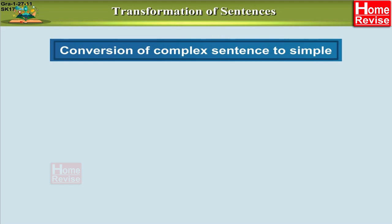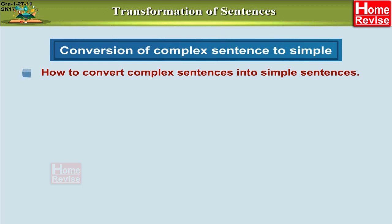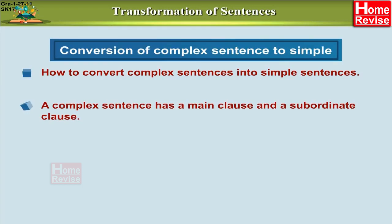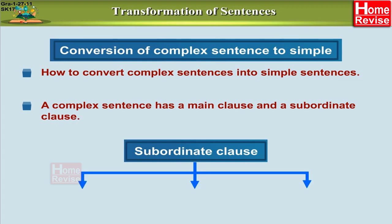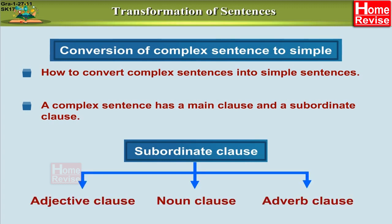Hi friends, now let's understand the conversion of complex sentences into simple sentences. As stated earlier, a complex sentence has a main clause and a subordinating clause. The subordinating clauses are adjective clause, noun clause, and adverb clause.